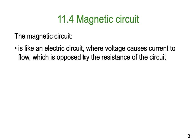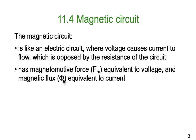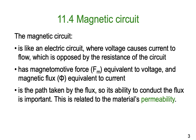So, magnetic circuits. This is like an electric circuit where the voltage causes current to flow, which is opposed by resistance to the circuit. So we could create a bit of an analogy here. We're going to be talking about magnetomotive force, sometimes called MMF, but the official symbol is M lower-script F for magnetomotive force. This is equivalent to what we might consider voltage in Ohm's law, and magnetic flux using the symbol phi is equivalent to current in our analogy with Ohm's law. It's also the magnetic path taken by the flux, so the ability to conduct that flux is important. This is related to the material's permeability, or its ability to conduct the magnetic field.